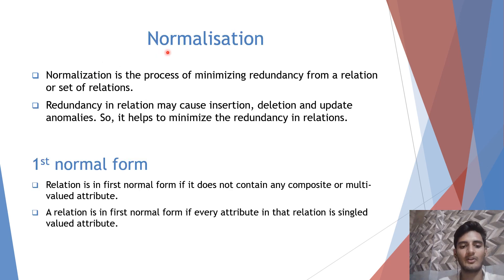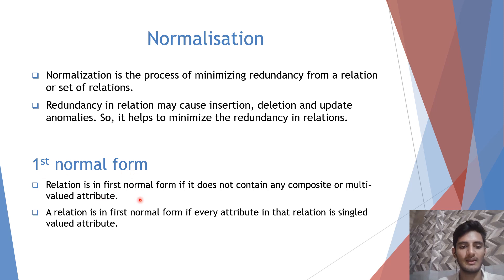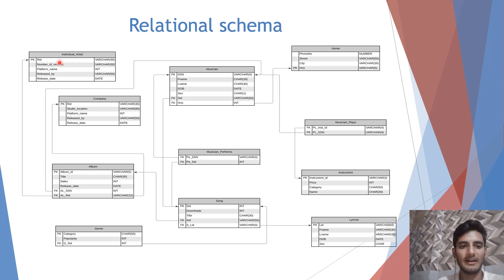Now we will be talking about normalization. Normalization is the process of minimizing redundancy from a relation or set of relations. We will be checking if our relation is in first normal form. A relation is in first normal form if it does not contain any composite or multi-valued attribute. Looking at our relational schema, we do not have any multi-valued or composite attributes, which implies all our relational schema is in first normal form.